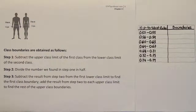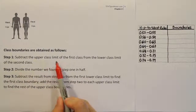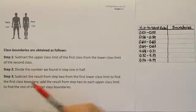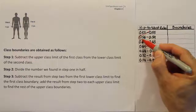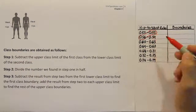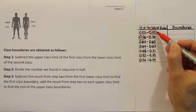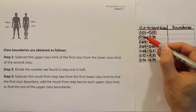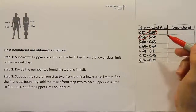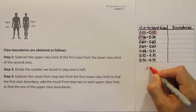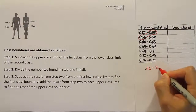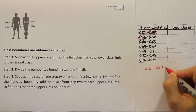Now let's perform the work. To accomplish step 1, we subtract the upper class limit of the first class from the lower class limit of the second class — those two values on the diagonal. We take .56 minus .55, which gives us .01. That's our difference.